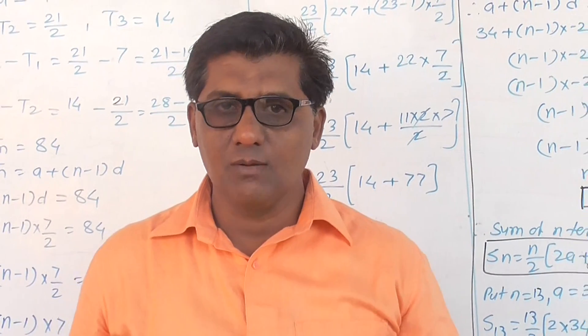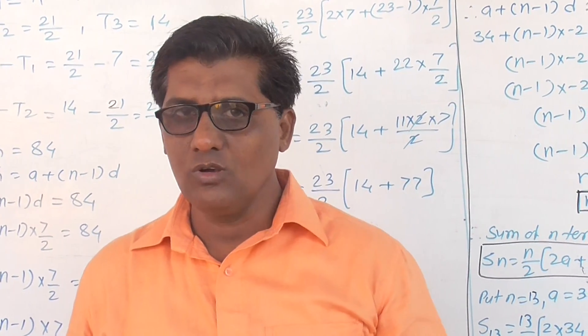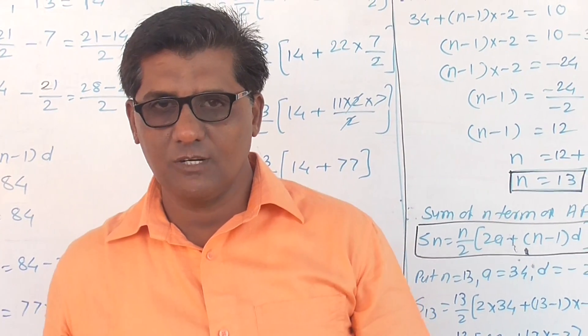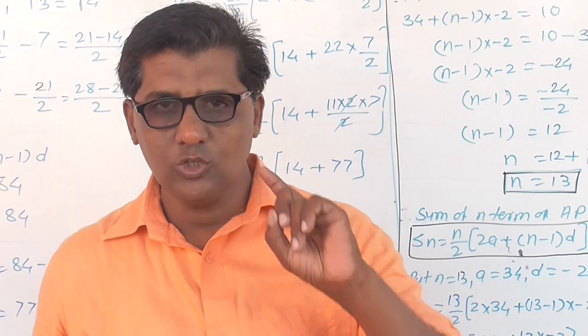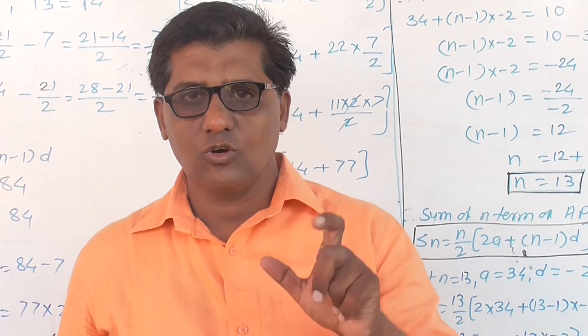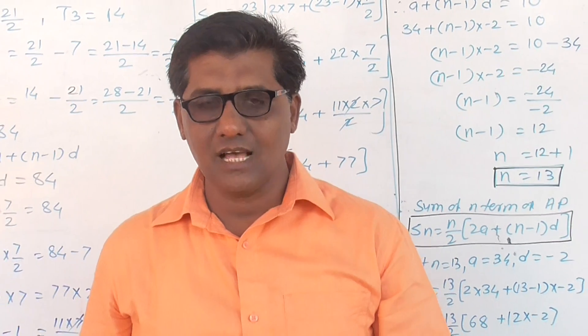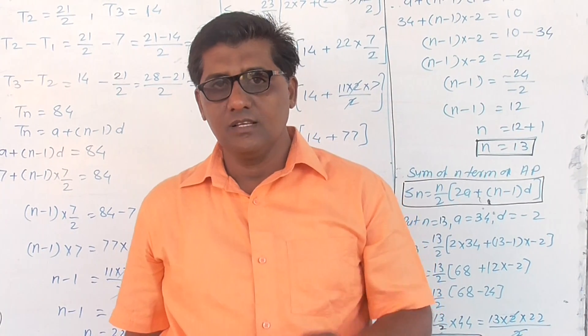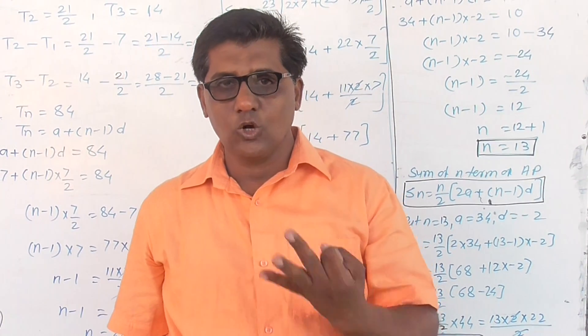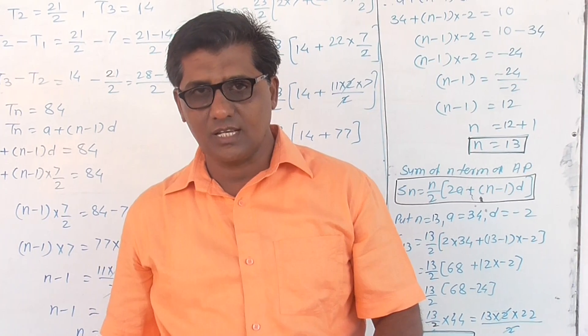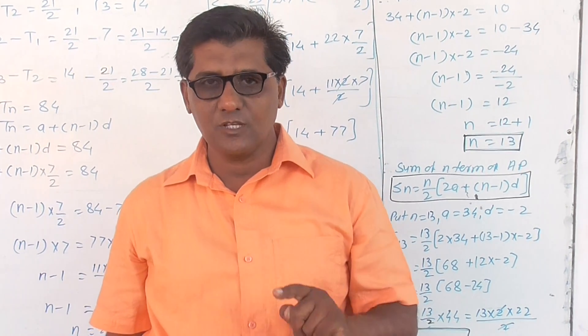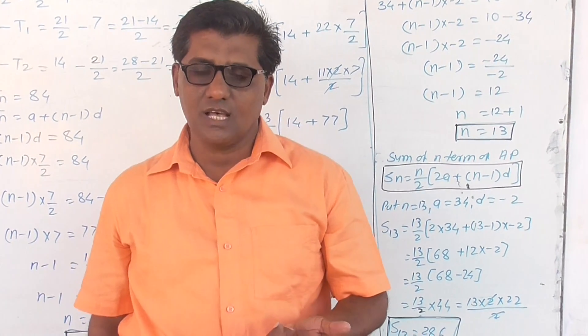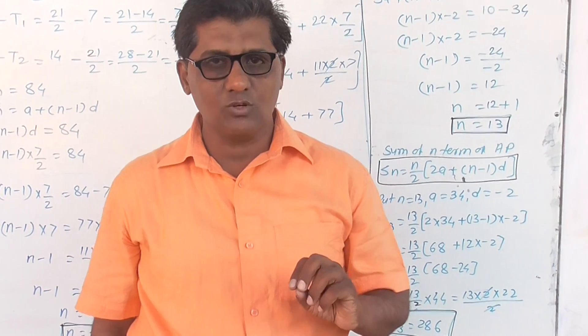Question number two: the sum of APs where the number of terms, the first term, and the common difference are given. The formula is the sum of n terms of arithmetic progression, and the problem is solved.